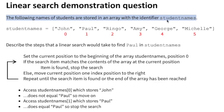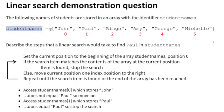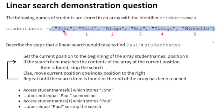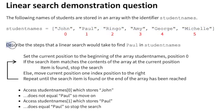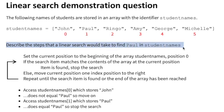The variable student names is a single dimension array of strings. There are six strings within the array, so the array length is six, but it uses index positions 0 through 5. The question asks us to describe the steps that a linear search would take to find Paul within student names.